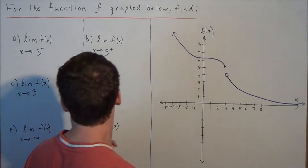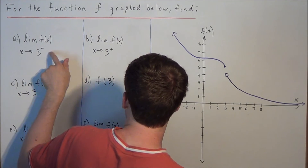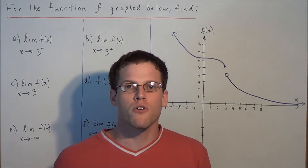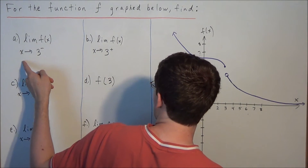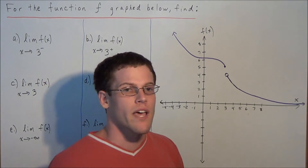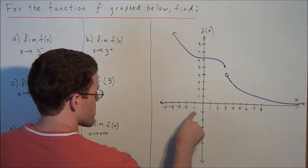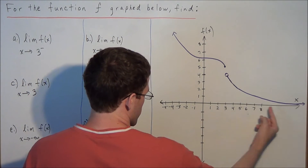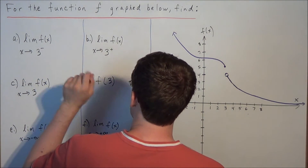For instance, if we have the limit — this notation '3 minus' doesn't mean negative 3, it means we're approaching 3 from the left side. So we have the limit as x approaches 3 from the left of f of x. What we're focusing on is approaching 3 from the left side, as opposed to coming in from the right.